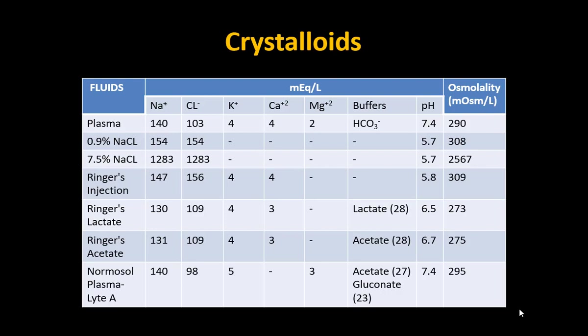In Plasma-Lyte, sodium is 140, chloride is 98, and potassium is 5. Magnesium is 3 in Plasma-Lyte and 1.5 in Kabi-Lyte. As buffers, these contain acetate and gluconate. The pH is almost similar to plasma and they are iso-osmolar.